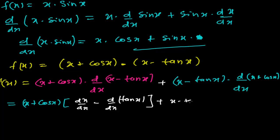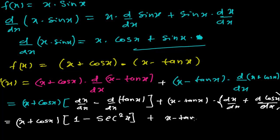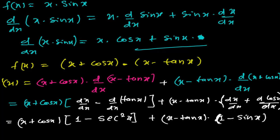Expanding: (x + cos x) times [dx/dx − d/dx of tan x], that is [1 − sec²x], plus (x − tan x) times [dx/dx + d/dx of cos x], that is [1 + (−sin x)], which simplifies to [1 − sin x]. So the derivative of (x + cos x)(x − tan x) equals (x + cos x)(1 − sec²x) plus (x − tan x)(1 − sin x). Let me write it properly — that is our answer.